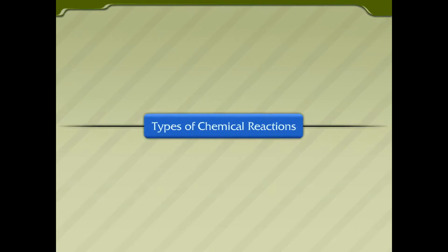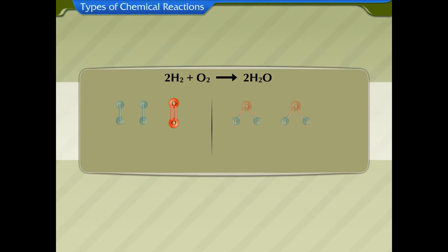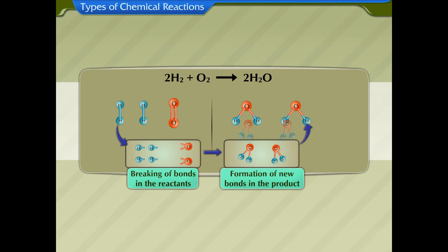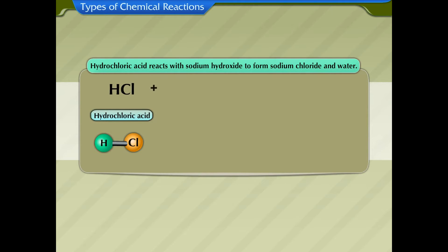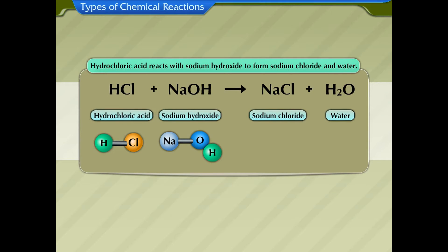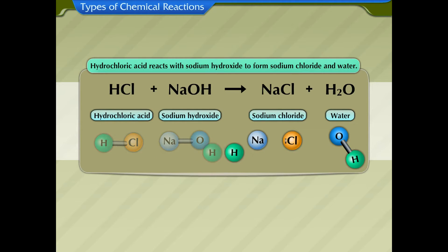Chemical reactions involve breaking and formation of bonds between atoms to form new substances. For example, hydrochloric acid reacts with sodium hydroxide to form sodium chloride and water. Bonds between hydrochloric acid and sodium hydroxide break and form two new compounds, sodium chloride and water.